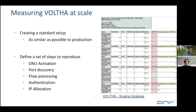The next important thing was to define which are the most important steps in our process. We identified five of them. The first one is the most straightforward: how long does it take for Volta to activate a number of ONUs? This translates in hardware to actually finding the ONUs attached to the network, discovering their capabilities, and storing them inside Volta so it knows which requests it can push down to the device.